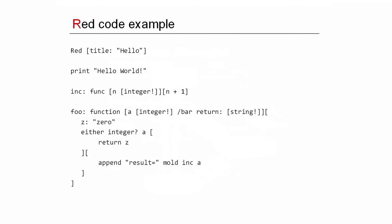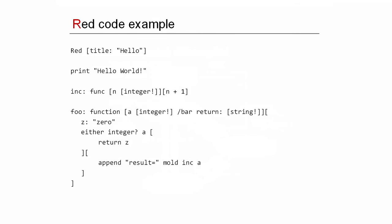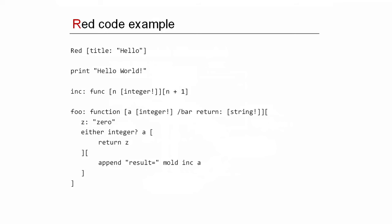Here's a very simple example of RED code. You have the same principle as in Rebol — a marker which is 'red' followed by a block that constitutes a header, and your code goes after that. Hello world is just 'print hello world' like in Rebol, and the rest of the code looks very much like Rebol, except for the optional return type annotation. It's not mandatory to put it, but if you do, the compiler will generate better, faster code.